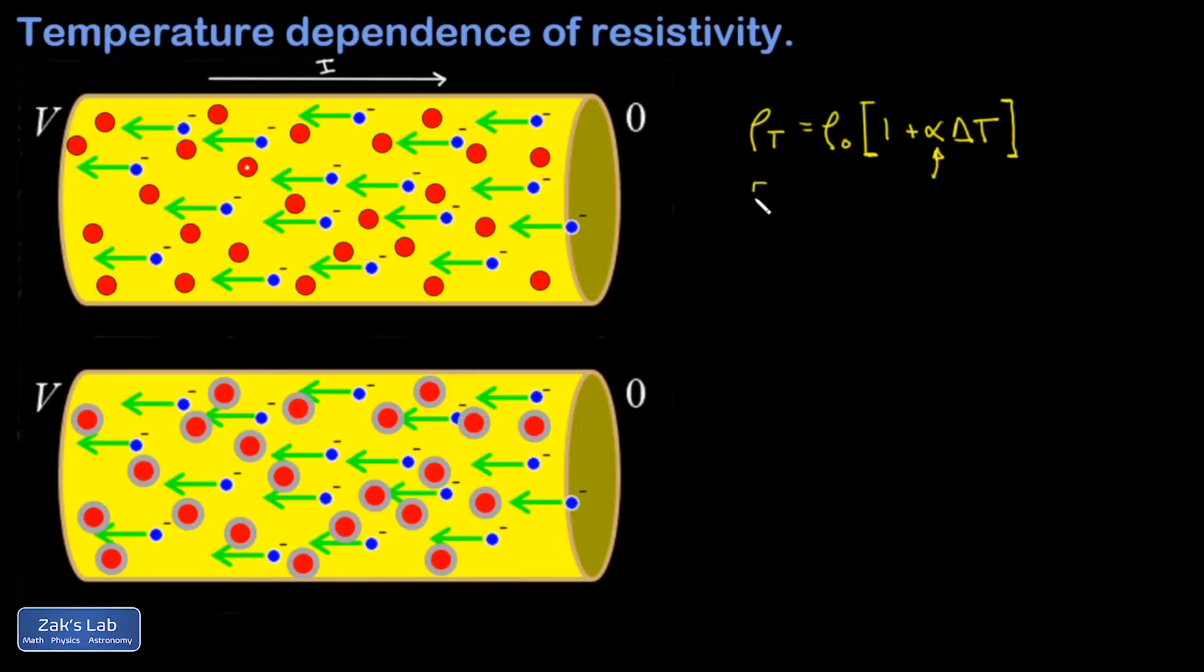I want to look at the units of alpha. In this term, alpha delta T, I've got to get just a constant out of that with no units on it. So when I add a 1 to that, that's going to give me a percentage change on the original resistivity. For this to come out unitless, I need the units of alpha to be 1 over Celsius degrees.